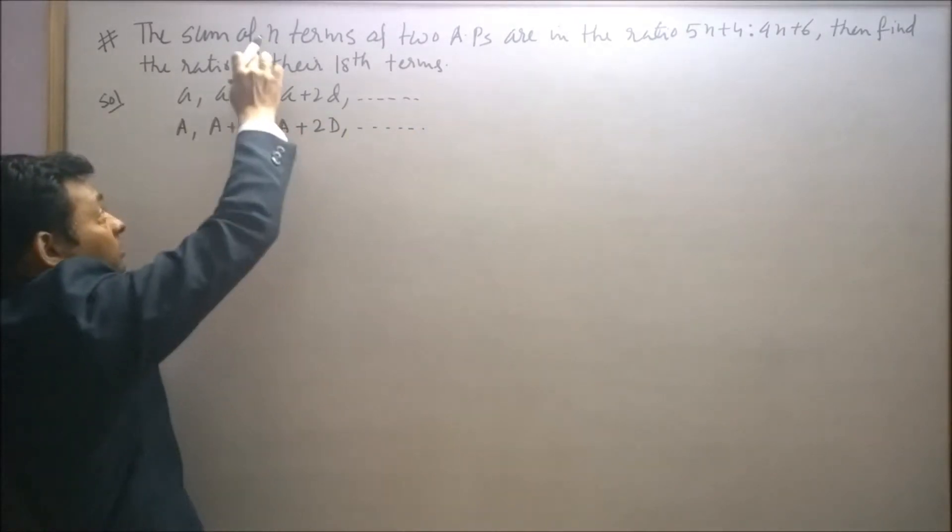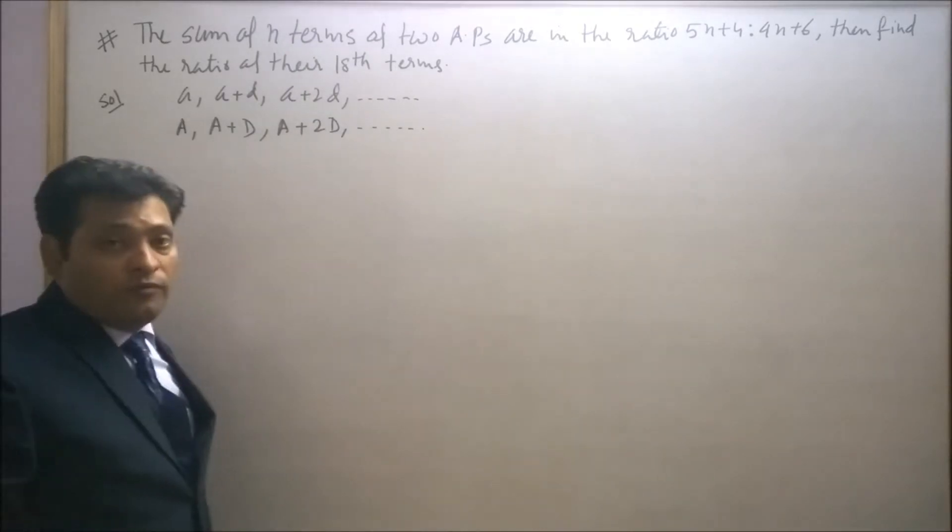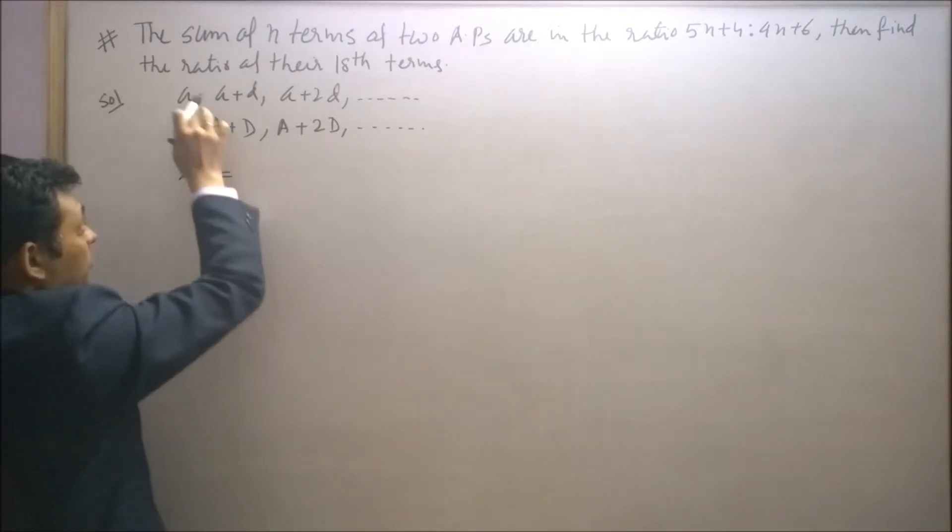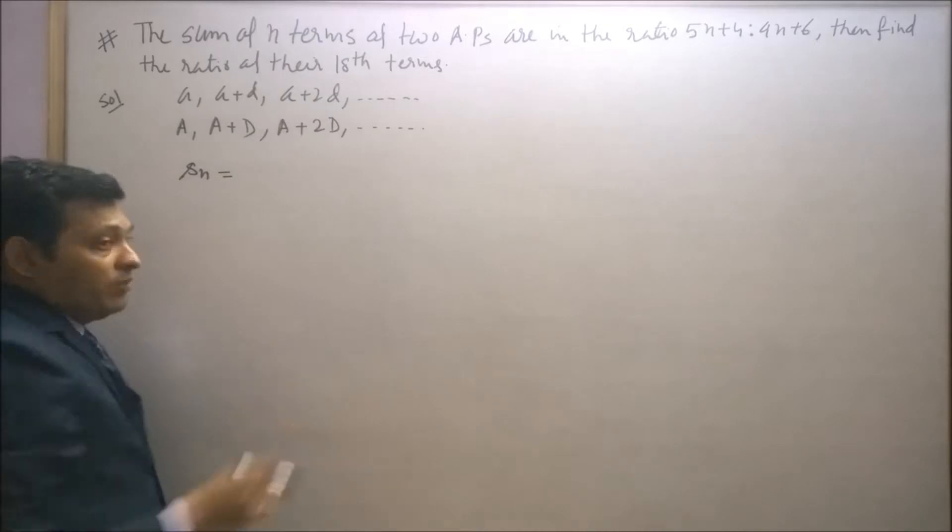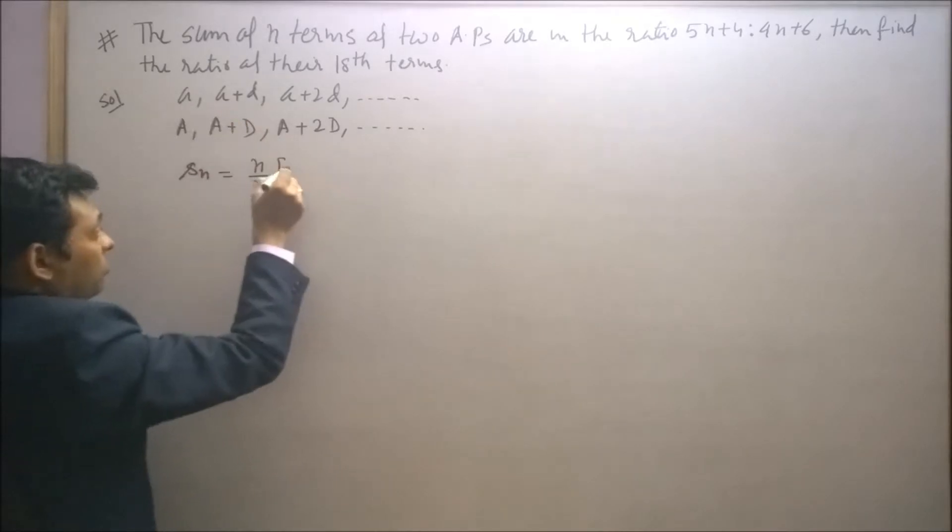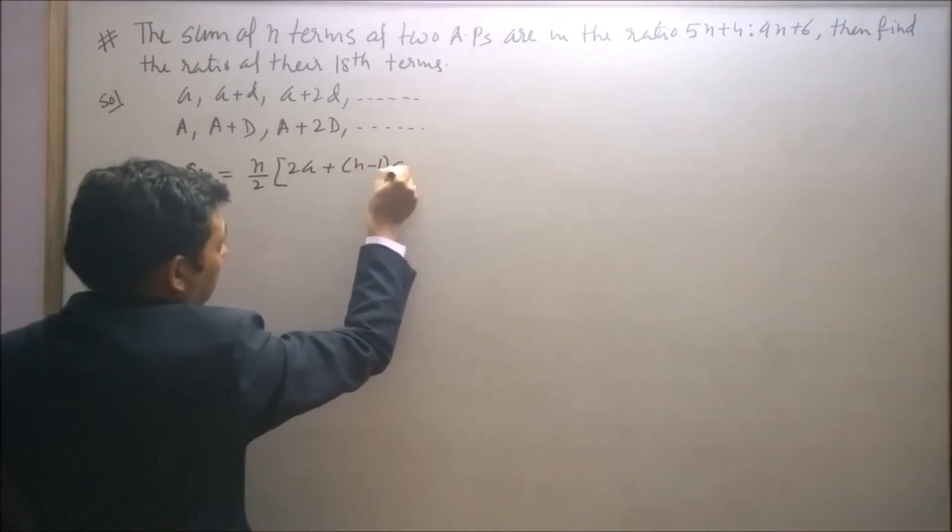It is given that the sum of n terms of the two APs are in the ratio of 5n plus 4 is to 9n plus 6. So, S n of this AP will be n by 2, twice of A plus n minus 1 into D.